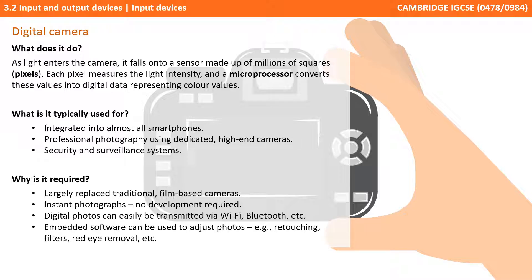Digital cameras allow for instant photographs, images, and movies with no development time required. Photos can be easily transmitted via Wi-Fi and Bluetooth, and embedded software allows us to adjust or touch up photographs straight away, applying filters, red-eye removal, and other features.